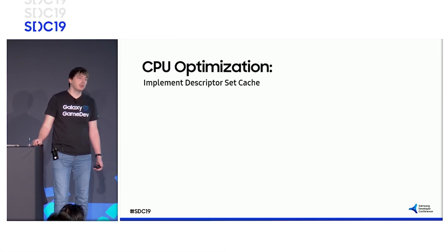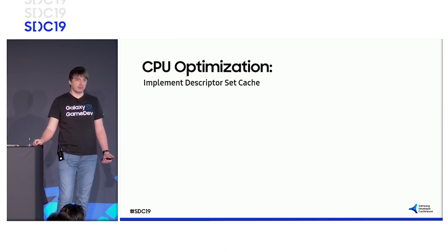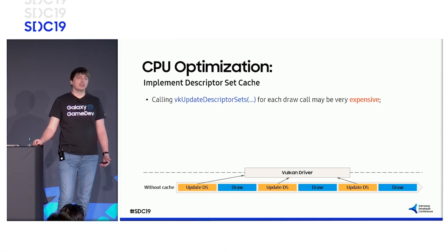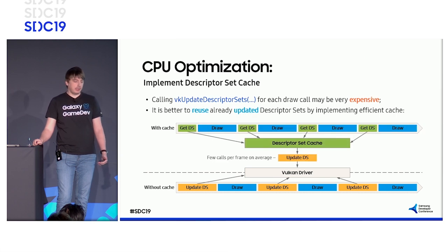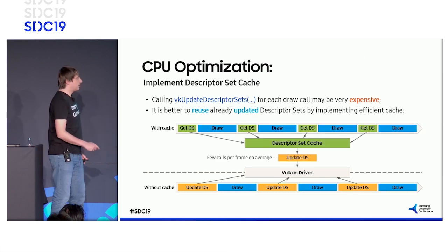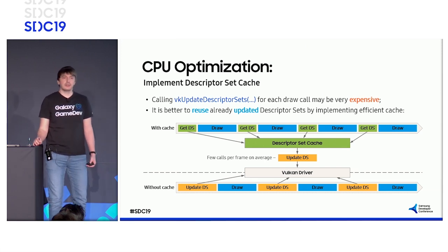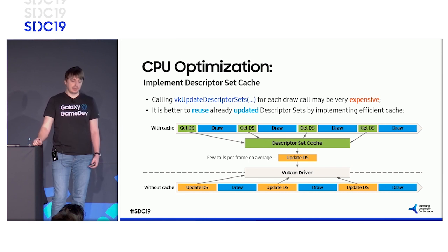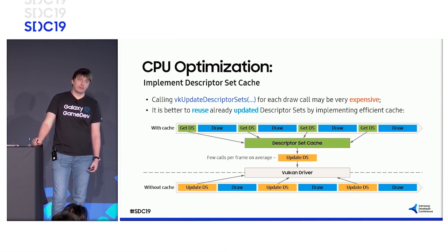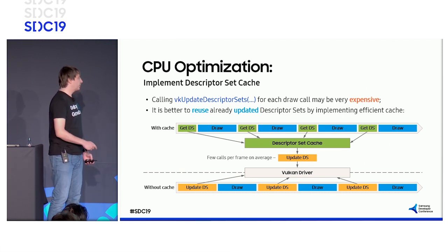In Vulkan, you need to use a descriptor set object to pass resources to shaders. However, updating descriptor sets for each draw call may be very expensive. It is better to implement a descriptor set cache and reuse already updated descriptor sets. With efficient implementation, there will be only a few updates per frame on average. Do not forget to use generated IDs instead of handles, as this is the most common source of problems. Also, make sure your implementation is more efficient than simply updating every draw call.